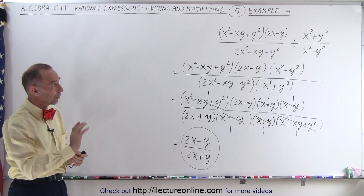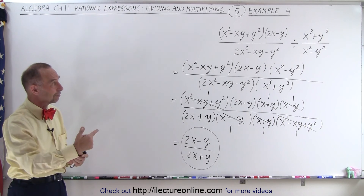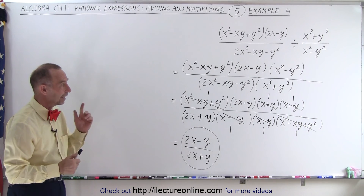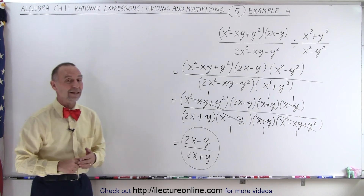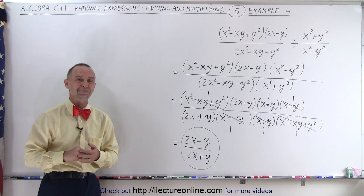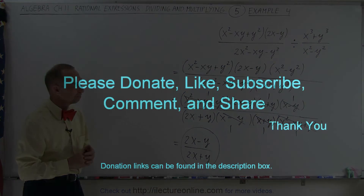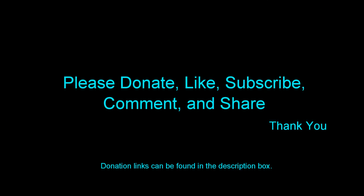And there's our final simplified result when we divide one rational expression by another. The first thing we do is take the inverse and multiply instead of divide — and that is how it's done.